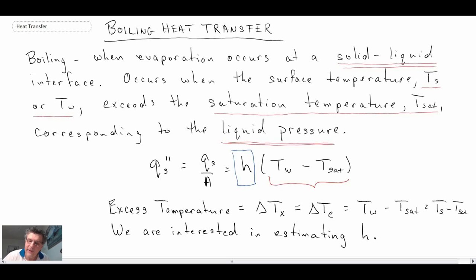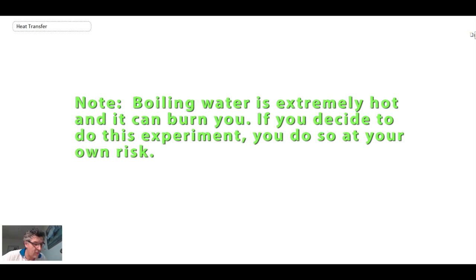Before we jump into the correlations that are used for boiling heat transfer, what I want to do is begin by looking at the physics of what is going on through the boiling process. We're going to begin with an experiment that everybody studying heat transfer should do, and that is to take a pot of water, put it on top of a stove, and watch the water boil. This is something that I did years ago when I took heat transfer, and that's what we're going to do right now—we get to repeat the experiment.